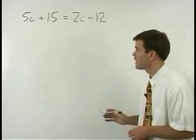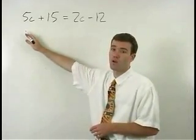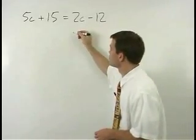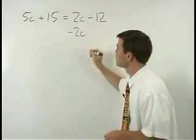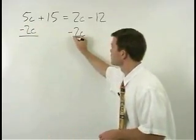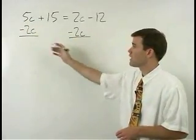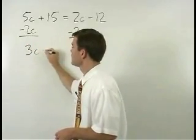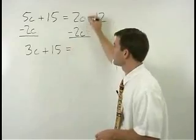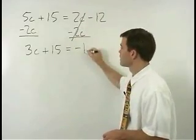So let's put our c's together on the left side of the equation and we do that by subtracting 2c from both sides. On the left we have 3c plus 15 and on the right we have negative 12.